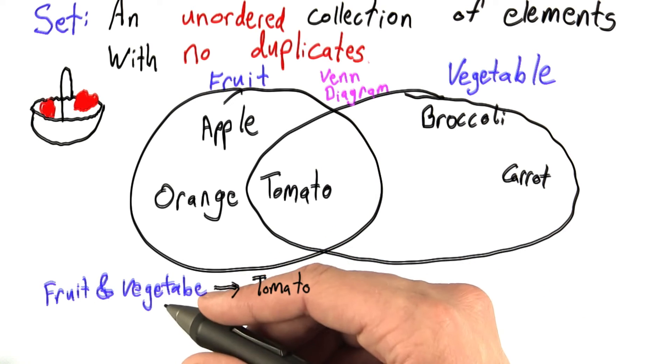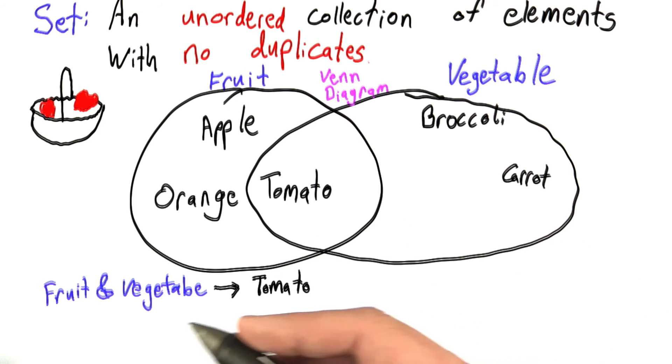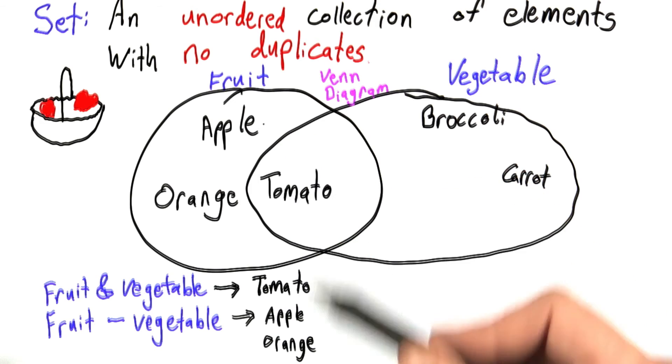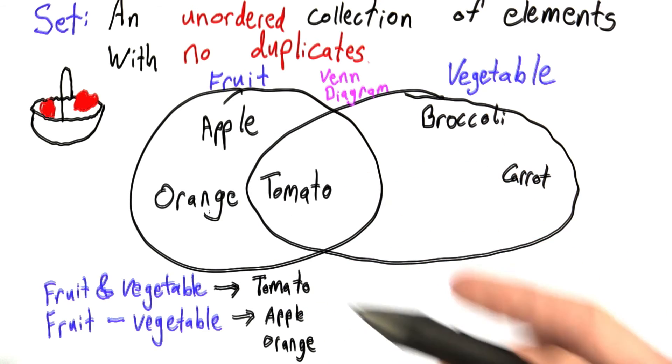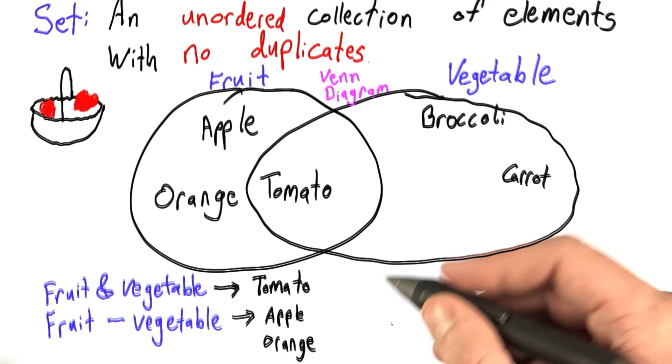We could also ask what elements are fruits but not vegetables, which is known as the set difference. And the only elements that are fruits but not vegetables are apple and orange.